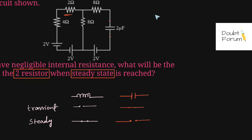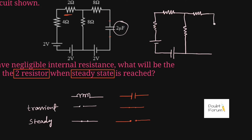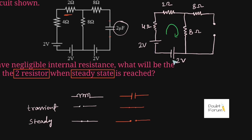Let me redraw this circuit. This capacitor here would be behaving like an open circuit, so we just make this branch open. This is a 2 volt battery with zero internal resistance, this is also a 2 volt battery, this is a 4 ohm resistor, this one is 2 ohm, this one is 8 ohm, and this one is also 8 ohm. This branch is open, so all we have to do is find the current flowing in this loop. We can see that these two batteries are connected with the negative plate of the first battery connected to the negative plate of the second battery, and both batteries have the same potential difference. So the net voltage across the combination of these two batteries would be zero, and when the voltage is zero, the current flowing through this loop would also be zero.